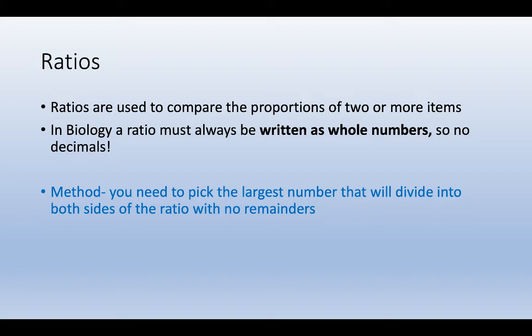Next, I'm going to talk to you about ratios. People find ratios quite tricky when they first start them, but the more you practice, the better you get. Hopefully when we're going through these examples, you'll see it's the same thing applied every single time. Every time you do a ratio, no matter if there's two numbers or three or four, you're doing the exact same thing every time. Ratios are used to compare the proportions of two or more items. In biology, a ratio must always be written as a whole number. So that means there can't be any remainders, no decimals like 2.4 or 5.1.